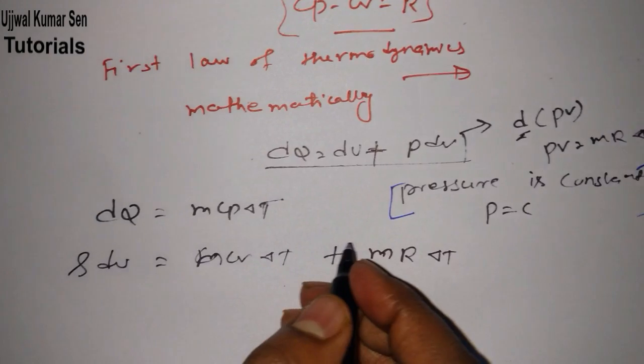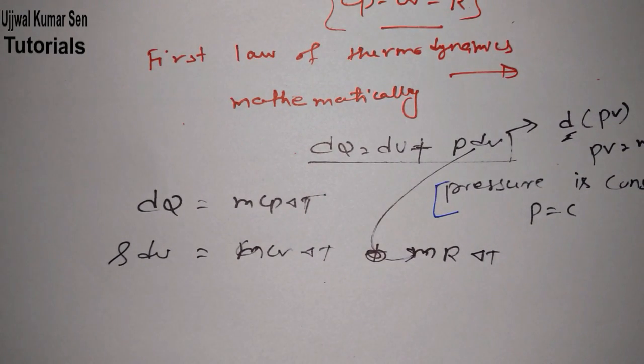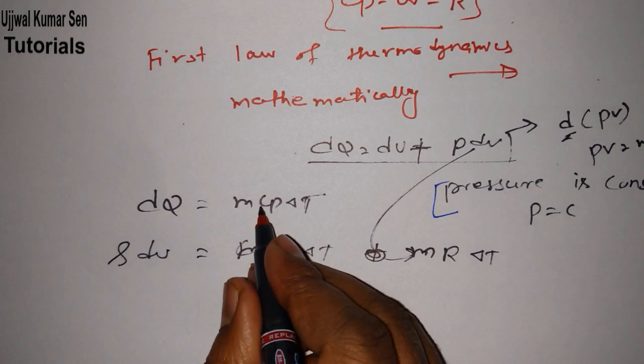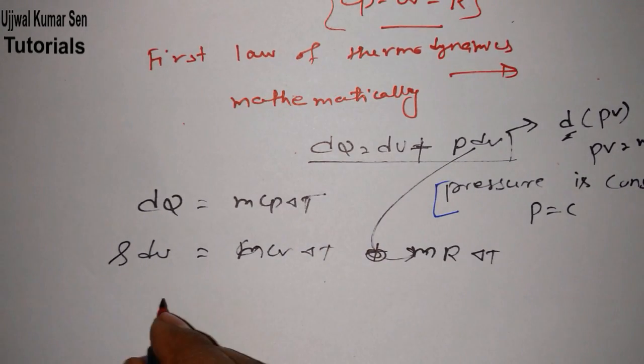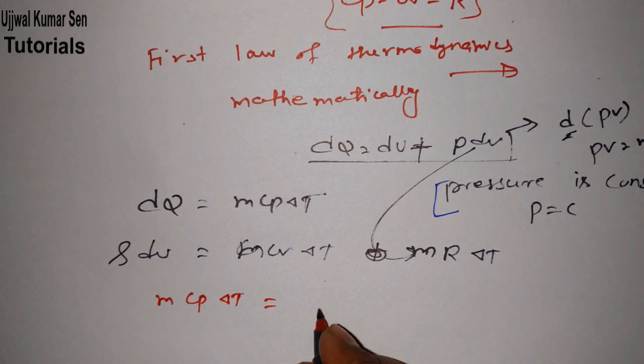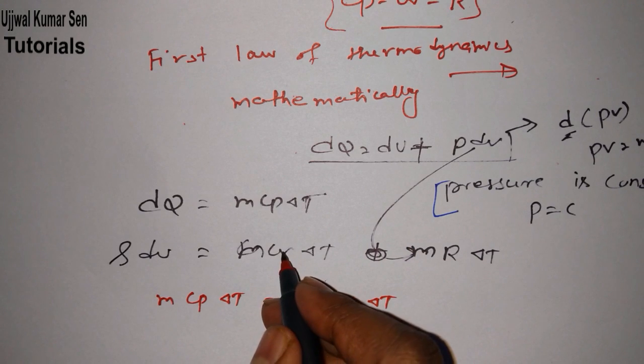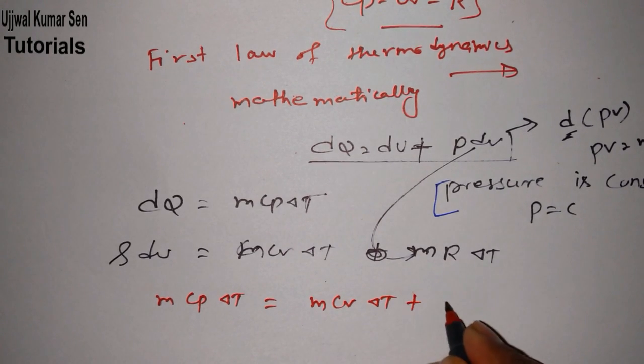Because of this derivative, what we can write? PV is equal to mR delta T. Now what we have to do, we have to just put these three values here in this equation.